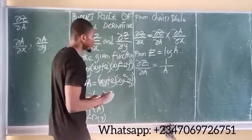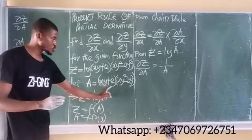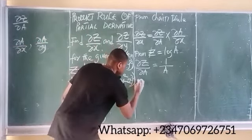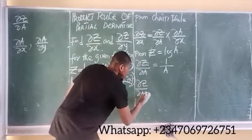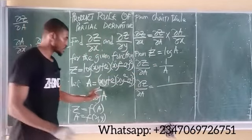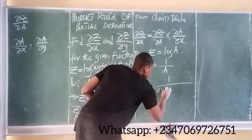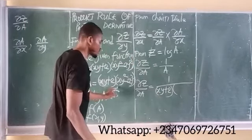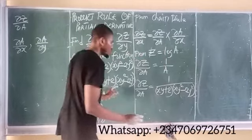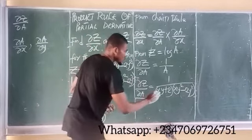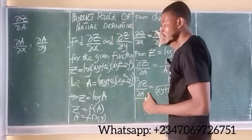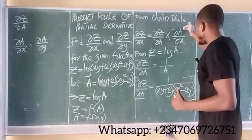Since I know that a equals xy plus 2 multiplied by xy squared minus 2y squared, I can substitute: partial z partial a equals 1 over (xy plus 2)(xy squared minus 2y squared). This gives the partial derivative of z with respect to a. Keep this aside — the first part of the formula has been found.